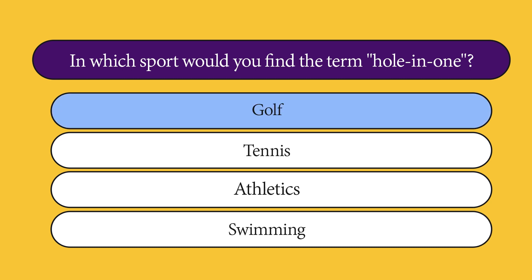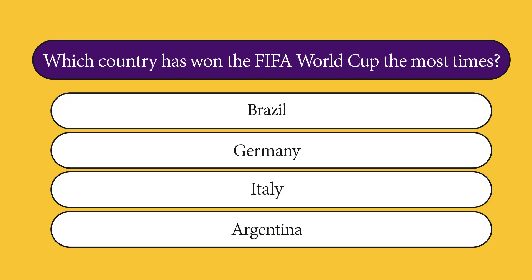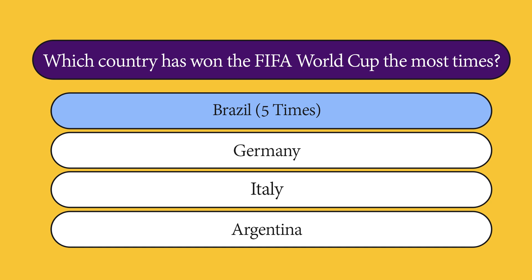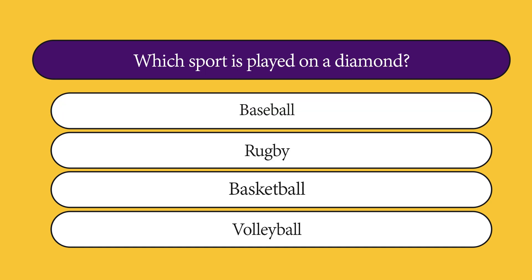The answer is golf. Which country has won the FIFA World Cup the most times? Brazil, Germany, Italy, or Argentina? The answer is Brazil, for five times. Which sport is played on a diamond? Baseball, rugby, basketball, or volleyball?